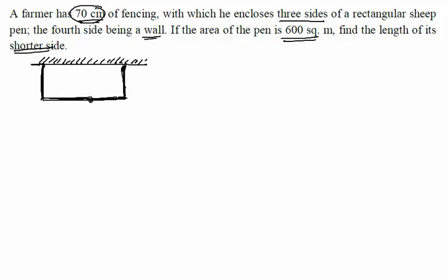Let us consider a few variables. Since the rectangular sheep pen is a rectangle, if I consider that this length is x, this automatically becomes x because opposite sides are equal in a rectangle. The remaining side, if I consider y,